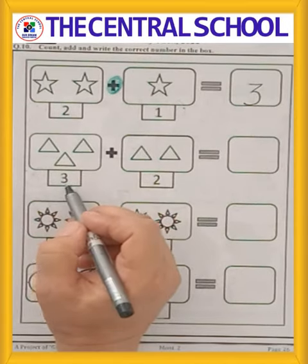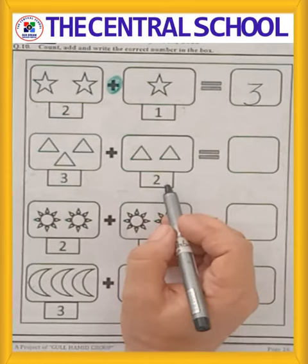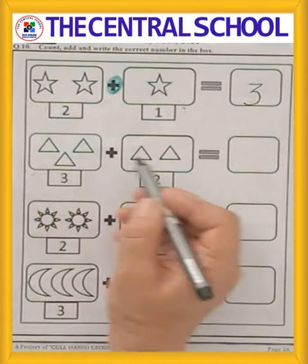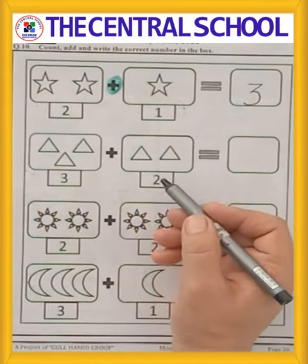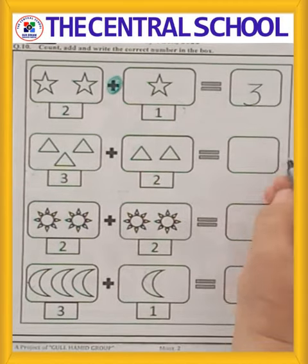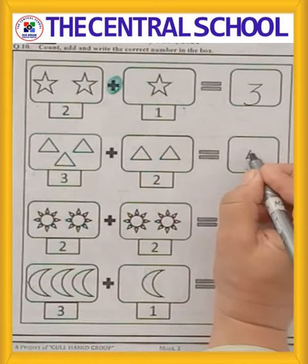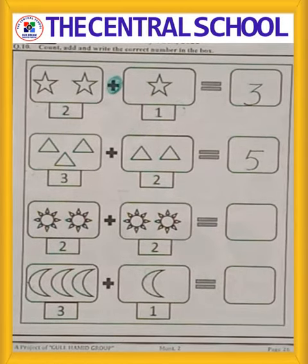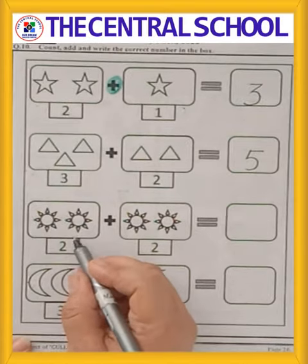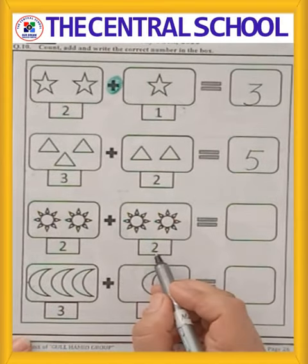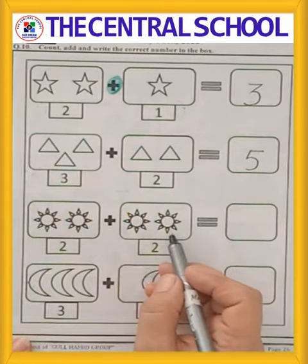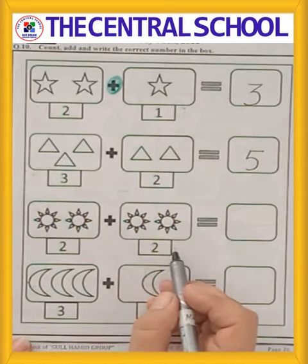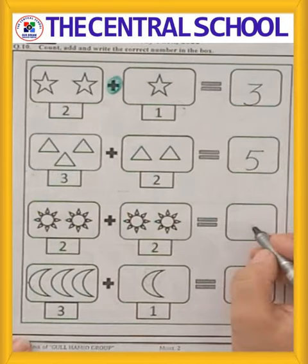Next one. Triangles. 3 and 2. 3 triangles, 2 triangles. Let's count. 1, 2, 3, 4, 5. How many triangles? 5 triangles. This means 3 plus 2 is equal to 5. So you have to write number 5 over here.